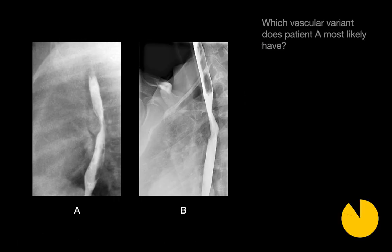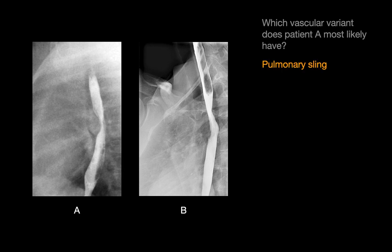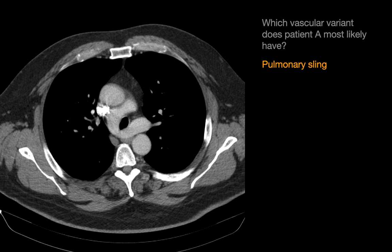What does patient A most likely have? If we're looking at vascular variants, the vascular variant that most likely would push on the anterior surface of the esophageal lumen would be a pulmonary sling. On CT, you can see the pulmonary sling coursing immediately anterior to the esophagus, with the esophagus situated between that pulmonary sling and the spine.